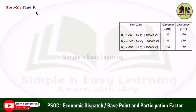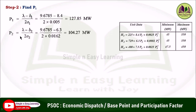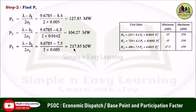Step 2: Find the power generation P_i for all three units. The formula is P_i = (lambda − b_i) / 2a_i. For unit 1: P1 = (lambda − b1) / 2a1. Substituting lambda from the previous step and b1, a1 from the cost function gives P1 = 127.85 megawatt. Similarly, P2 = 104.27 megawatt and P3 = 217.85 megawatt.